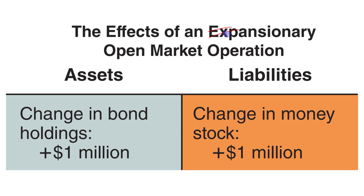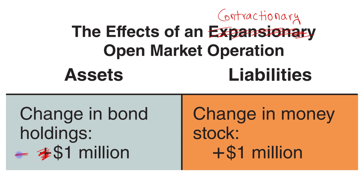Here we have the effects of a contractionary open market operation. On the asset side, because the central bank sells the bonds, the assets will decrease — there will be a minus sign — the assets will decrease by $1 million. And the money in circulation will also be reduced by $1 million.